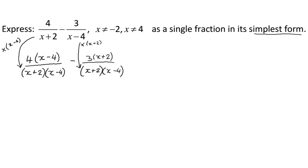Now that I've got a common denominator, I'm going to go to the side here, there's not enough space. I can combine the fractions. So I've got x plus 2, x minus 4. And then my numerators, I've got 4, x minus 4, subtract 3, bracket x plus 2.